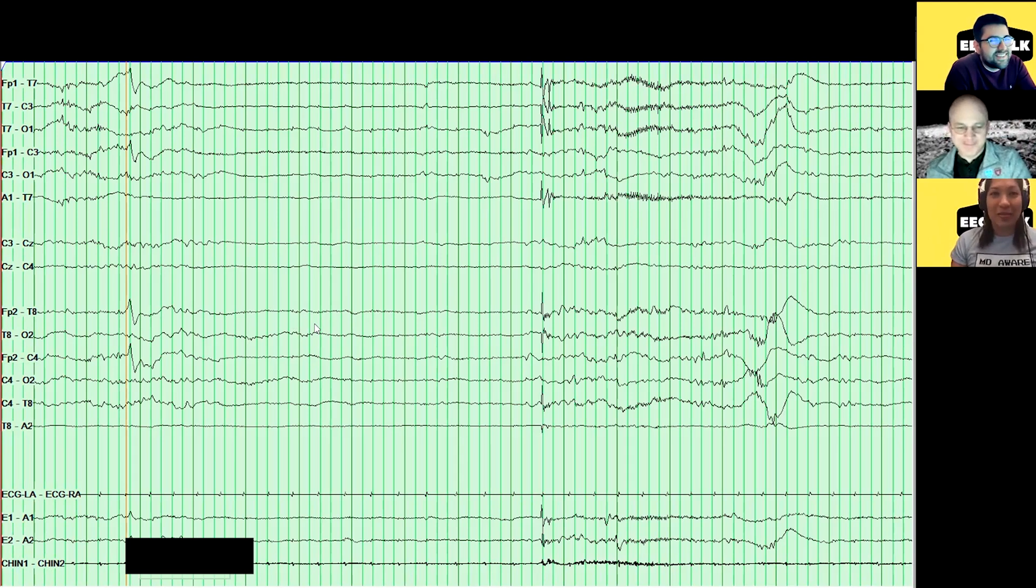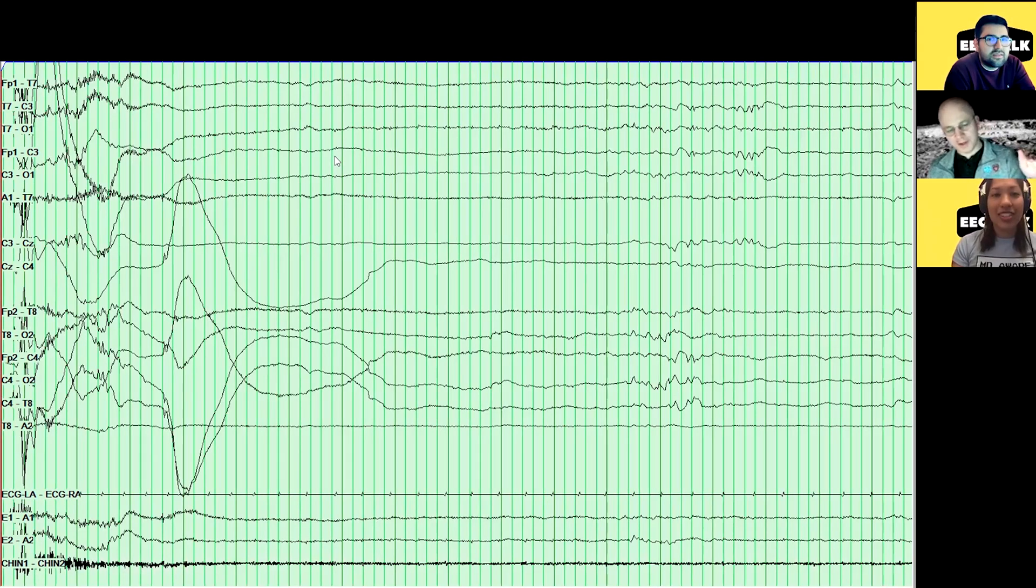That we call tracé discontinue because the guys that studied neonatal EEG were all French, apparently. So we have all these French terms for neonatal EEG. What's tracé alternons? Exactly. That's when the suppression part is not quite this suppressed. Where you still see frequency activities, it's just lower than the bursts. And you see that as the kid starts to get closer and closer to term, essentially. Okay. So it goes tracé discontinue and then gradually shifts to tracé alternons and then just becomes continuous. And then activity moyenne, right? These French guys, it just... Does that just mean normal activity? Yeah. Average activity. Yeah. Average activity. Yes, exactly.